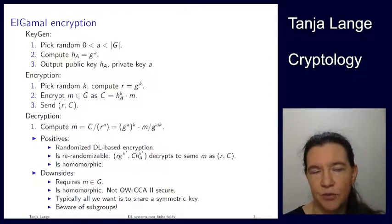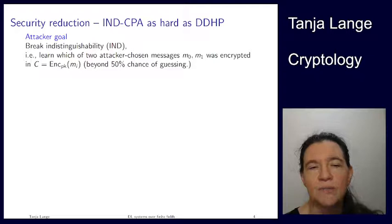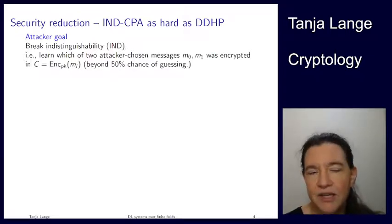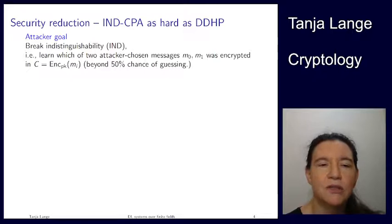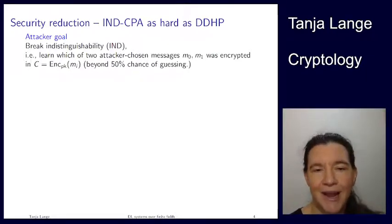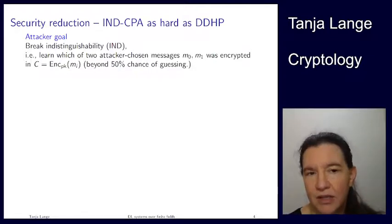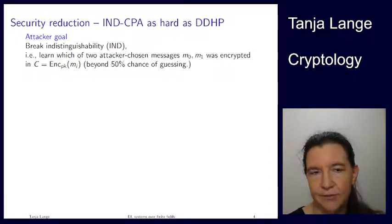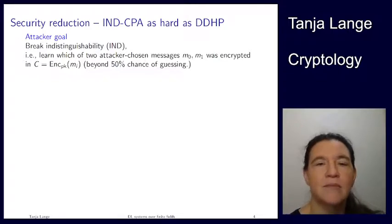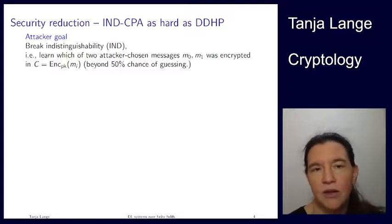Let's take this as an example for sub-group security. If the attacker's goal is breaking indistinguishability, the indistinguishability game works as follows: the attacker gets a public key, thinks hard about it, then submits two messages M0 and M1 to the challenger. The challenger sends an encryption of one of the two messages — in our case a pair (R, C). The attacker always has a 50/50 chance of guessing, so advantage is measured as everything beyond 50%. We're only giving CPA security here: the attacker gets the public key and can encrypt themselves, but has no decryption oracle.